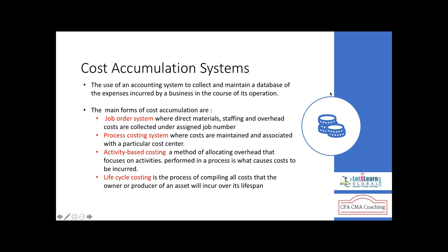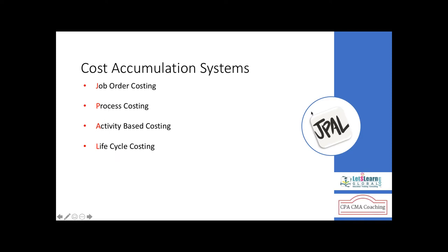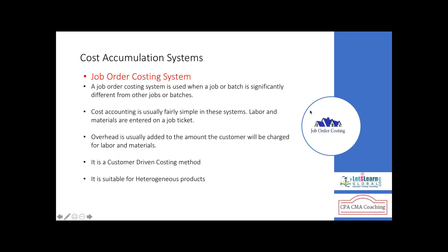We will discuss each costing method in a separate topic with numerics. Let us begin with job order costing. What is it? Why use it? Which companies use it? And how do we find the cost of a particular job? A job order costing system is used when a job is performed based on the specifications of a customer.